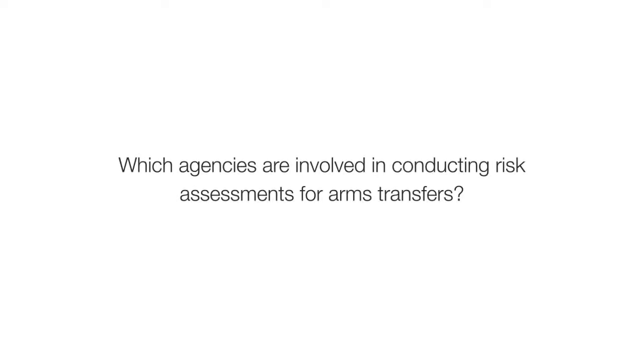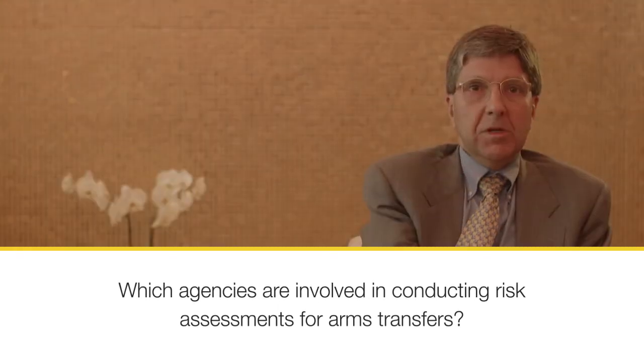Which agencies are involved in conducting risk assessments for arms transfers? We collect, depending on the license of the item being transferred and the recipient, we get information from essentially the entire U.S. government — Department of Commerce, Department of Defense, Department of State, Department of Justice. We get information from all of them, but we also get information from our intelligence community and bring it all together, so it's a pretty broad-based information.